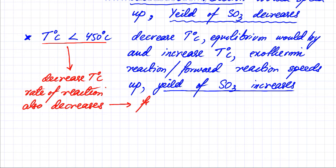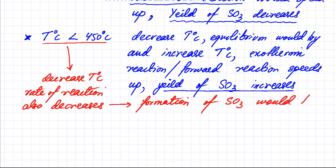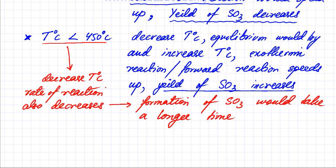The end problem encountered is that formation of SO3 is going to take a longer time. It's better to get a lesser yield in a quicker time rather than a higher yield that takes seven days. For example, if I'm getting 80% SO3 in one hour, that's going to be much more useful than getting 100% SO3 over seven days.